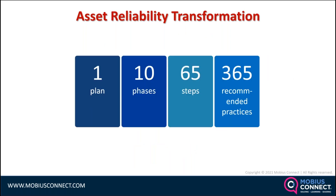The ART — Asset Reliability Transformation — is made up of 10 phases, those 10 colorful blocks. We've defined 65 key steps, breaking those 10 phases into 65 major chunks. Within those major chunks we've defined 365 recommended practices, and within those practices there are multiple additional things you need to do. You might be thinking, 'Oh my goodness, we have to go through all 365?' Well, yes — the reality is that to make reliability successful, there are a number of things you have to do.